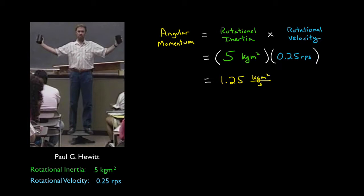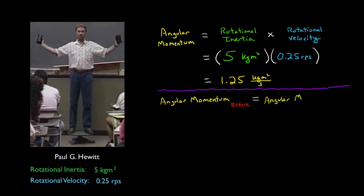But here's the thing. Angular momentum is always conserved. Disregarding friction and heat loss, what you have before will equal what you have after. So, if his rotational inertia is going down, what then happens to his rotational velocity?